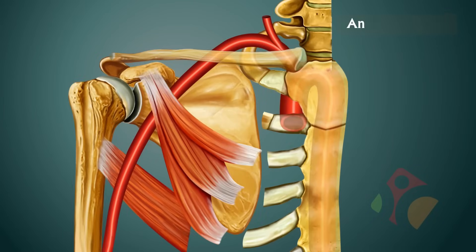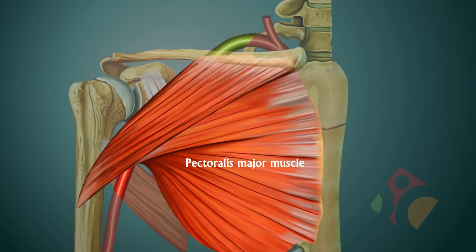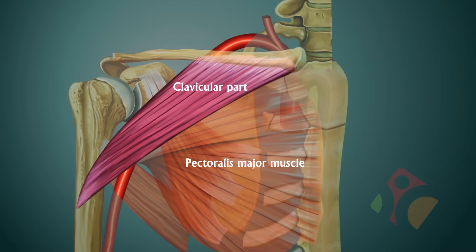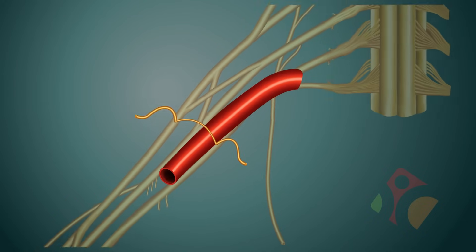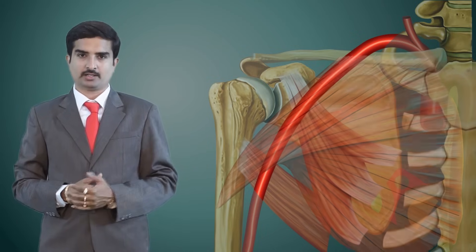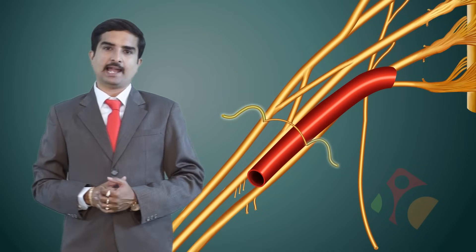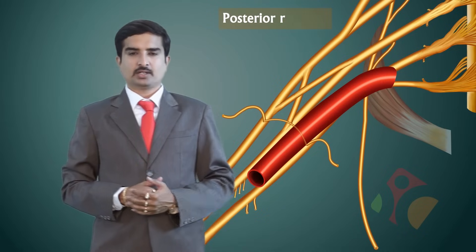Let us discuss the relations of the first part of the axillary artery in detail. The anterior relations are the clavicular part of the pectoralis major muscle and the nerve loop communicating between the medial pectoral and lateral pectoral nerves.